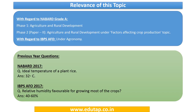Let us look at the relevance of this topic with respect to our examination. For NABARD Grade A, this topic comes under Phase 1, Agriculture and Rural Development section, and in Phase 2, it comes under factors affecting crop production. For IBPS AFO, it comes under the broader topic of agronomy.